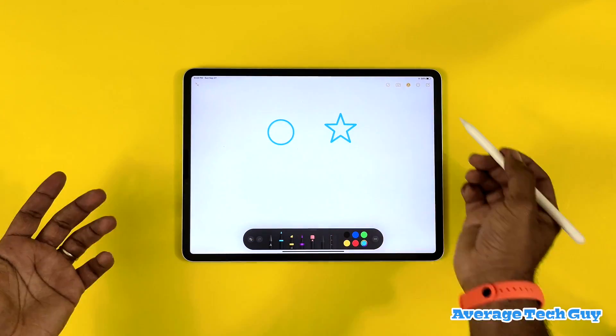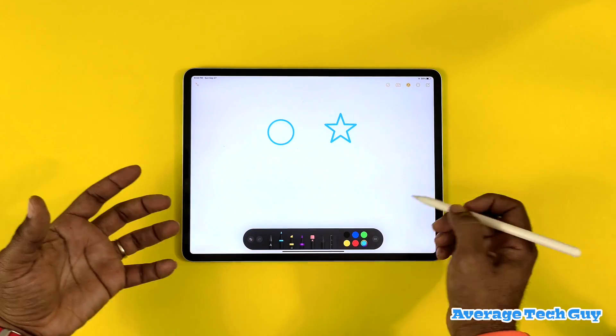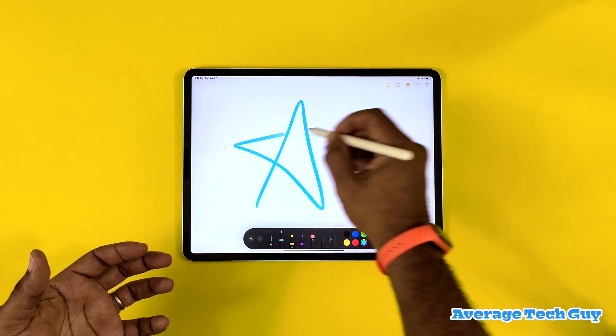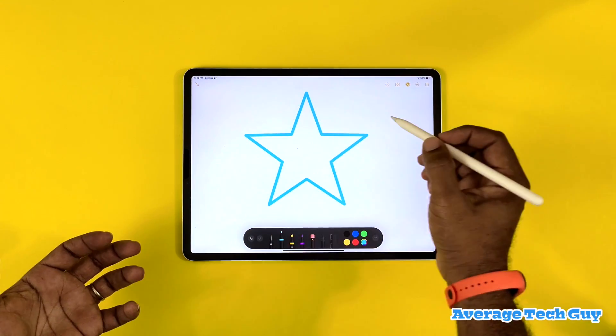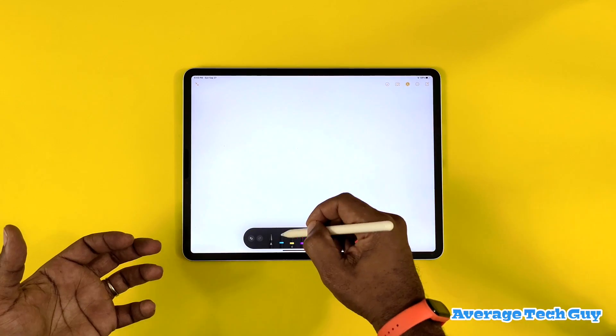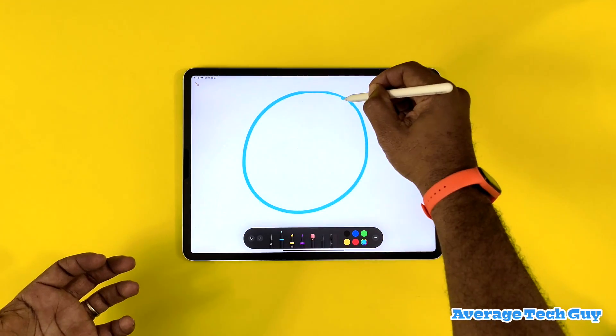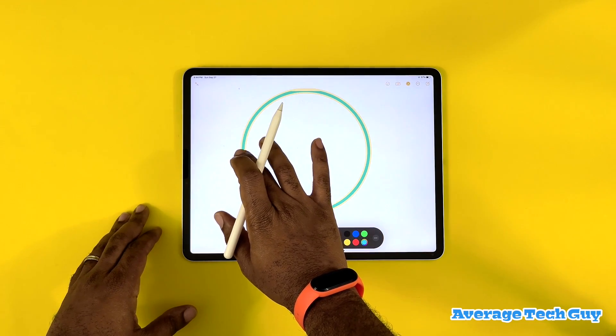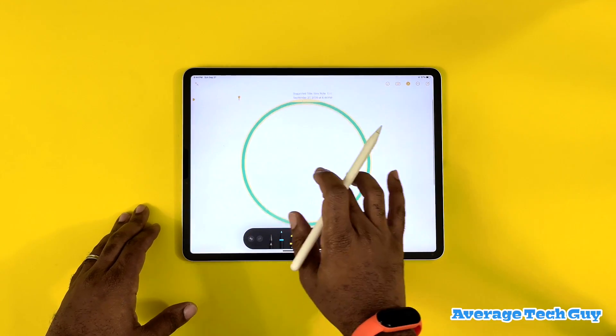No matter how big the star is or how big the circle is, it's going to become a full circle. Then you can actually highlight this and move it around on the page, do whatever you need to do. A lot of people wanted to know what are all the shapes you can make with this new feature.